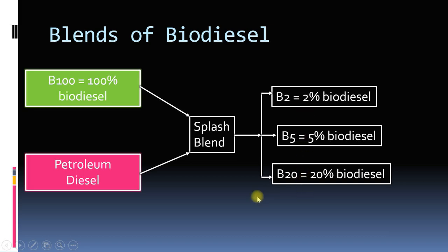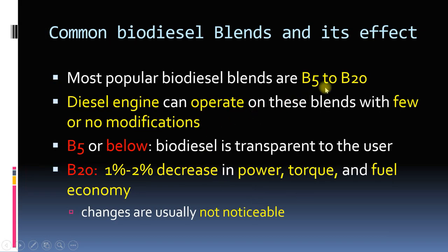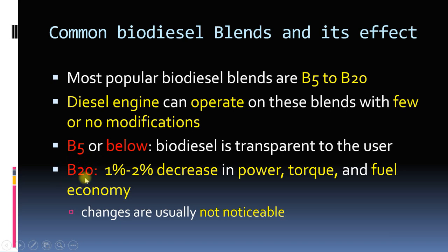The most common blend level used to date is B20 at maximum. If you use up to B20, few or no modifications are required in the diesel engine. If you use B5 or below, there is no change in user experience. However, for B20 there will be a one to two percent decrease in power, torque, and fuel economy, but these changes are usually not noticeable.